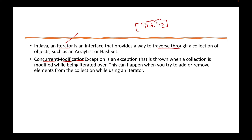So there are two types of iterators, and the difference between those is most important. The next thing is concurrent modification exception. This exception is thrown whenever there is a collection that we are trying to traverse over, but while traversing, if we try to change, update, add, or remove any element from that collection, this exception is thrown.